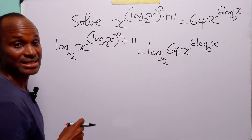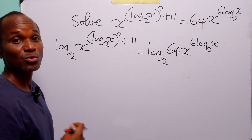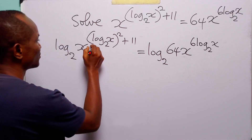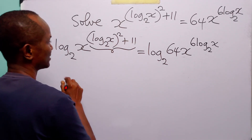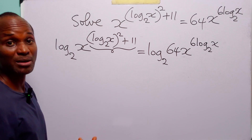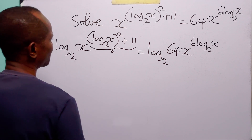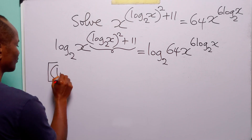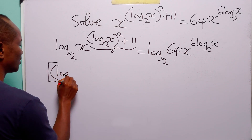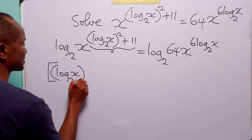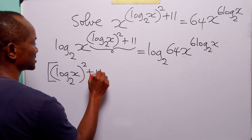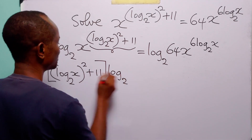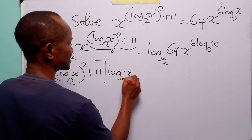Now, on the left-hand side, we are going to apply the power rule of logarithms — the rule that says we can bring down this exponent to the front to become a multiplier. When we apply this rule, we have log to base 2 of x squared plus 11, multiplied by log to base 2 of x.